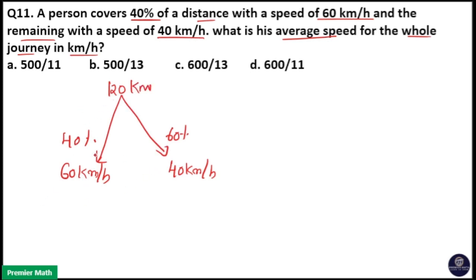So 40 percentage of 120 means 48, because 10 percentage is 12, that means 40 percentage is 12 into 4, which is 48 km. Then 60 percentage of 120 means 10 percentage is 12, 60 percentage means 12 into 6, which is 72 km.